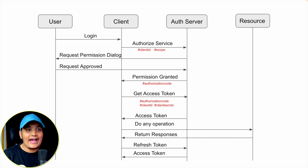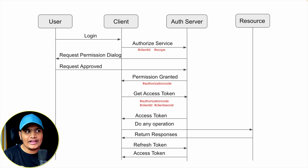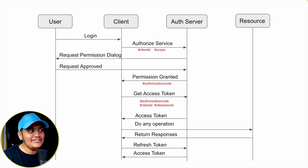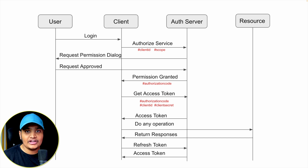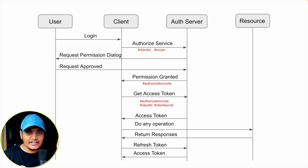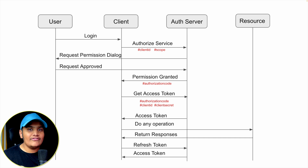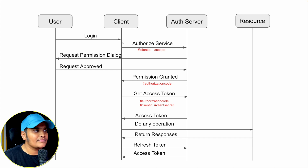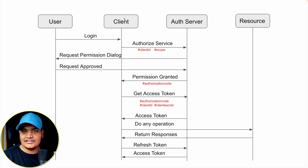Scope defines what type of access you need — suppose you need only email ID, username, first name, last name, or mobile number. Whatever scope is defined, accordingly you will get permission to access the resources. This is the authorization request the client sends to the OAuth server. The OAuth server will return a permission dialog box asking the user whether they give consent for this particular application to authenticate. Once you give the consent, the request is approved and the OAuth server gives the client an authorization code.